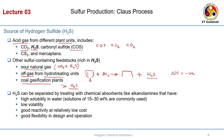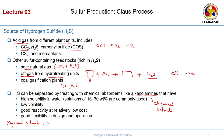The H2S can be separated by treating with chemical absorbents such as alkaline amines. For chemical solvents like ethanolamine, there are two processes: absorption and regeneration. The chemical solvent absorbs the H2S chemically. Physical solvents also exist — for example, methanol or propylene carbonate — which can recover H2S and CO2.